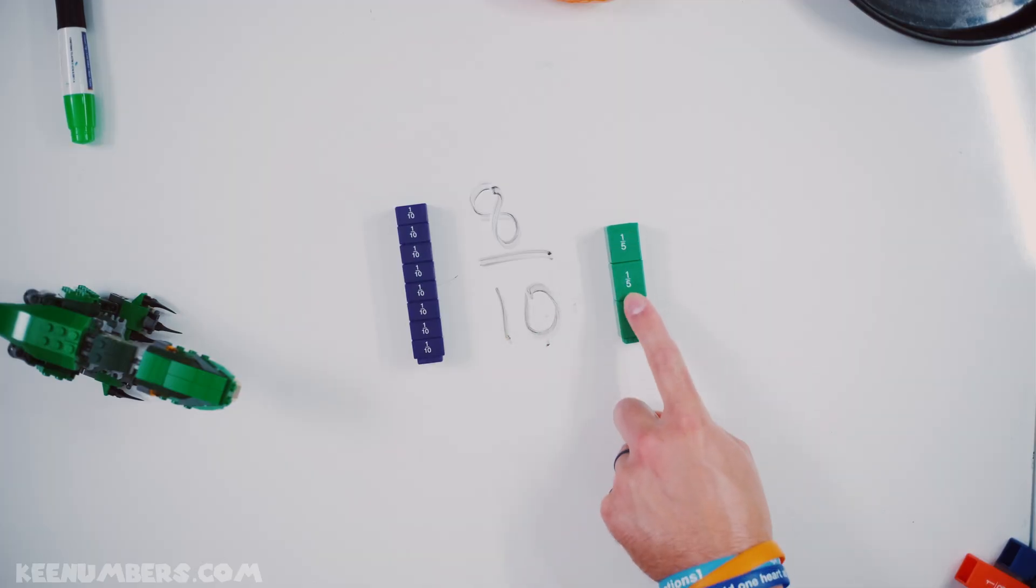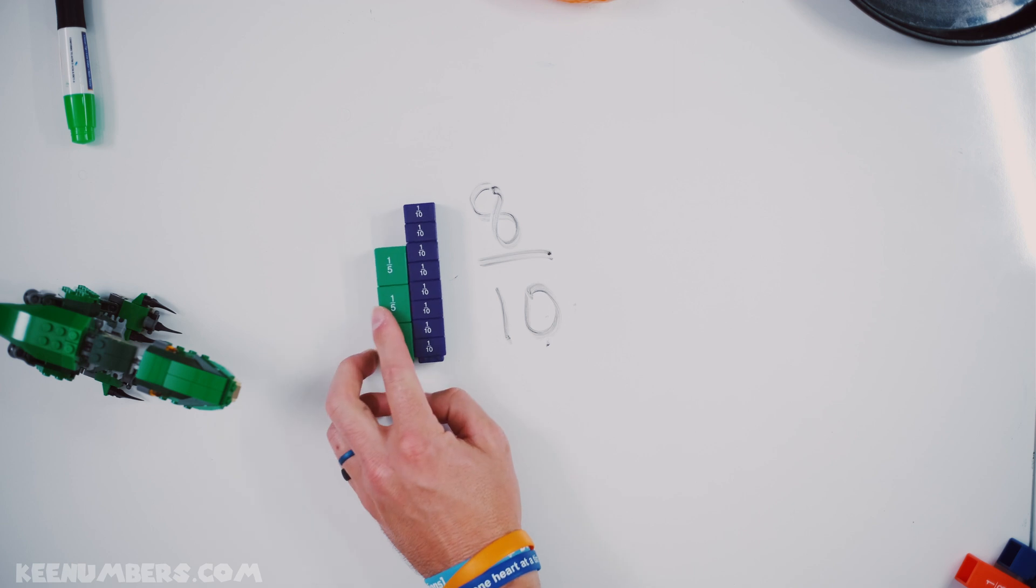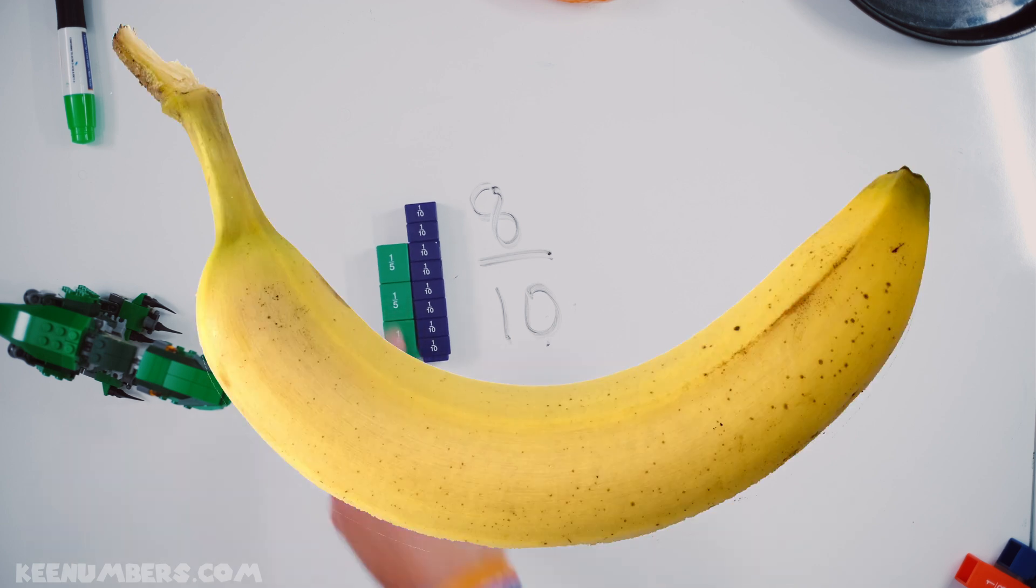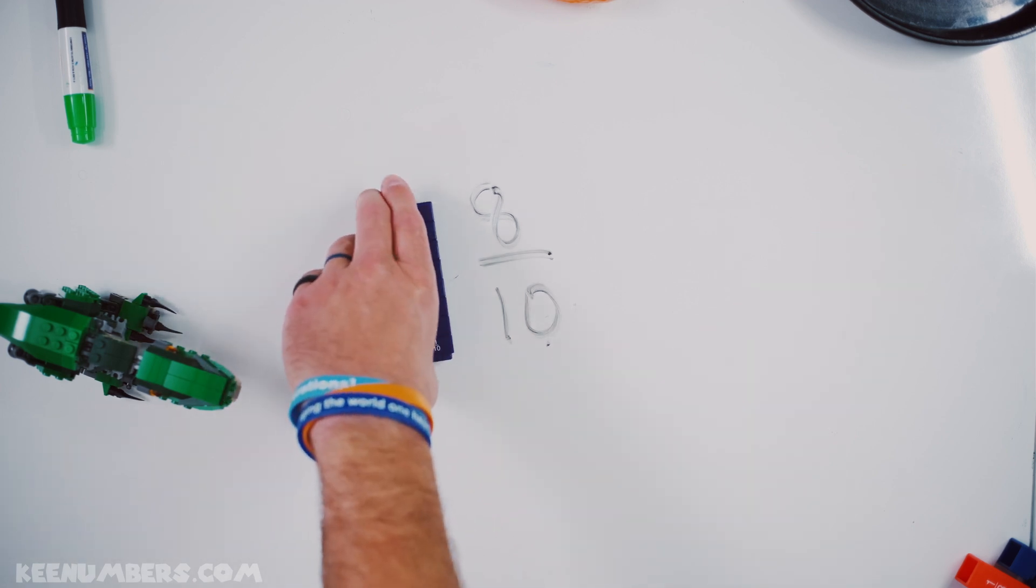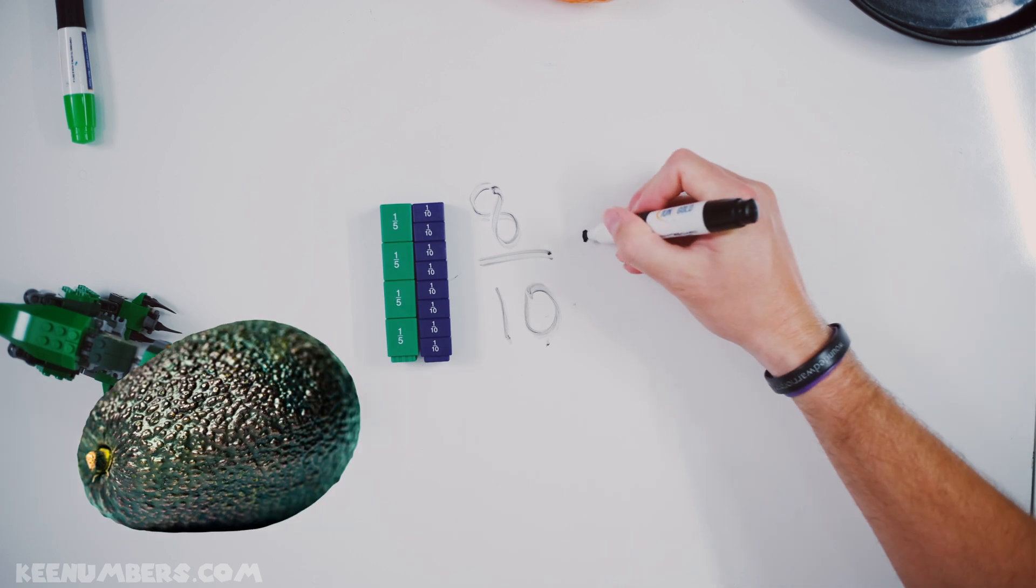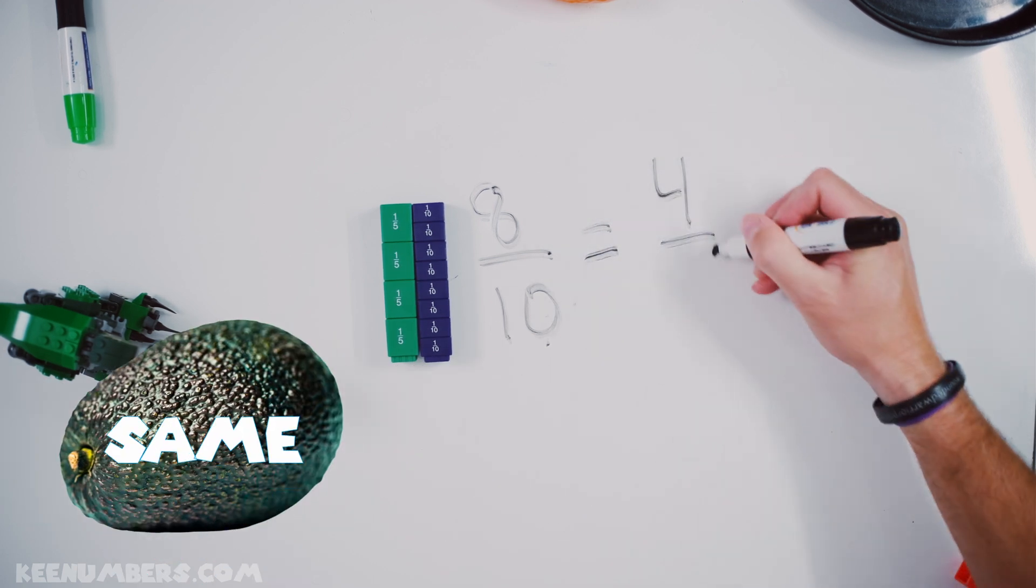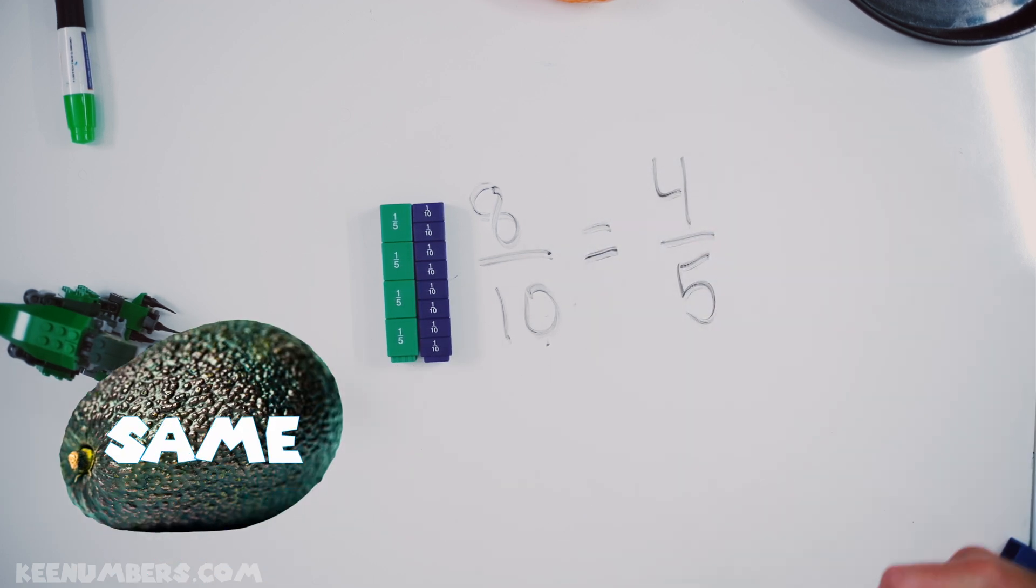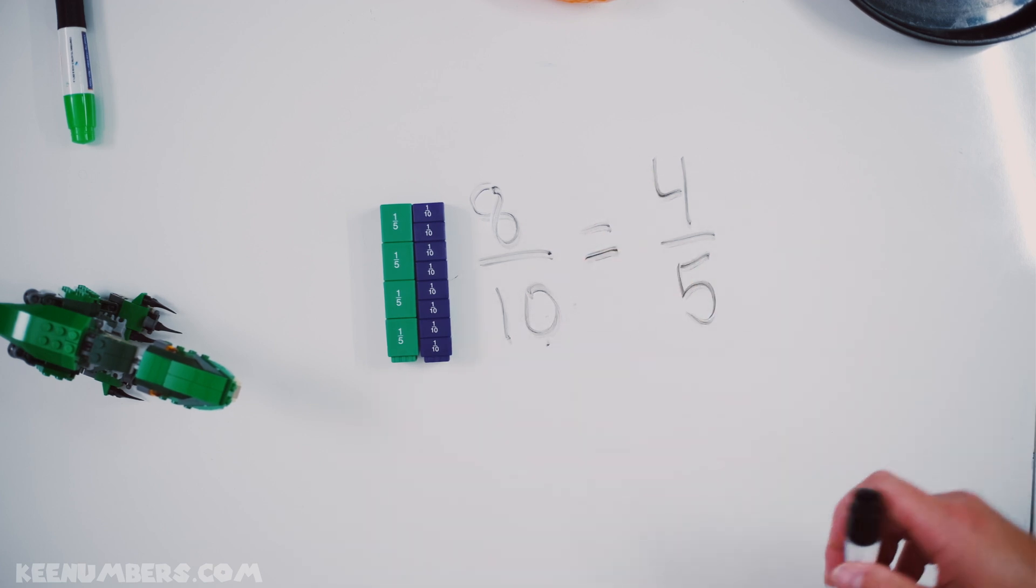Is eight-tenths three-fifths? No! How do I know to use fifths? Well, we'll talk about that in a second. But check this out. Eight-tenths is the same thing as four-fifths! So we get to simplify by reducing eight-tenths to four-fifths.